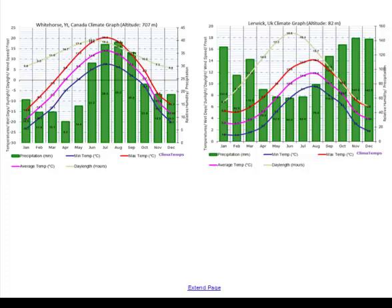There's a problem with this climatograph: if you look at the temperature scale, the Whitehorse scale goes down to minus 30, whereas the United Kingdom one only goes down to zero. This is a classic case where the temperature scales don't match, making it really hard to make a comparison. Similarly with precipitation: Whitehorse goes from zero to a maximum of 45 centimeters, whereas the other goes up to 160. It can be very challenging to compare climatographs if you don't use the same vertical scales for temperature and precipitation.